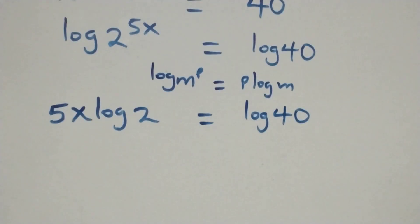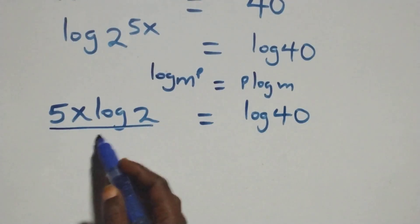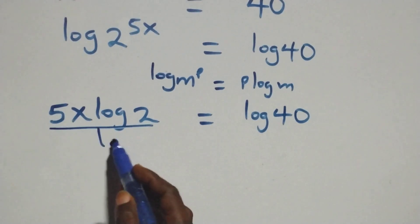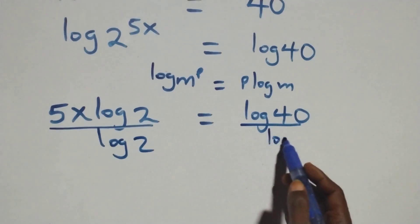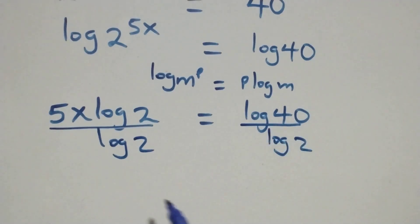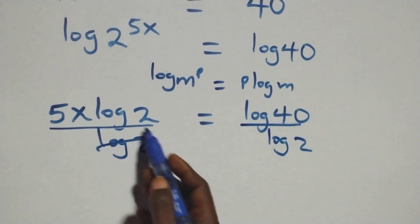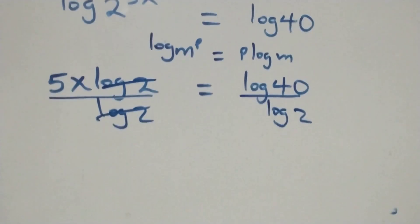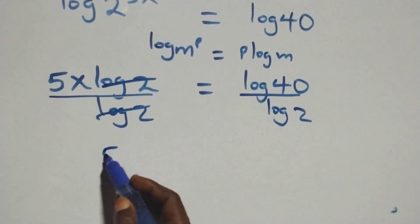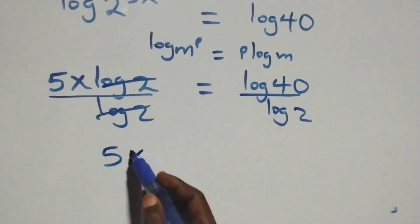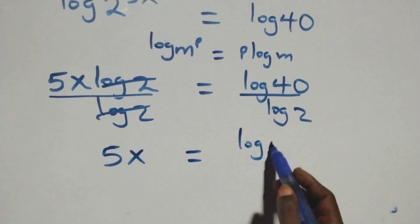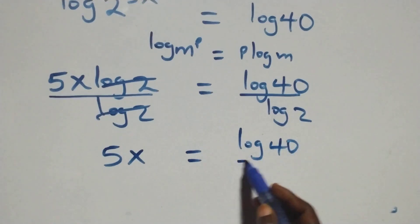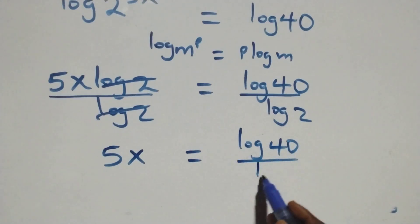The next step: we divide both sides by log 2 — divide this side by log 2 and also divide this side by log 2. The log 2 terms cancel each other, and we have 5x equals log 40 over log 2.